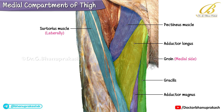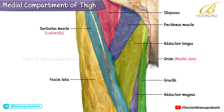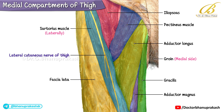In addition to the adductor muscles, we can also appreciate the iliopsoas, the sartorius, and the fascia lata covering the rest of the thigh. The nerve visible superficially over the sartorius is the lateral cutaneous nerve of the thigh.